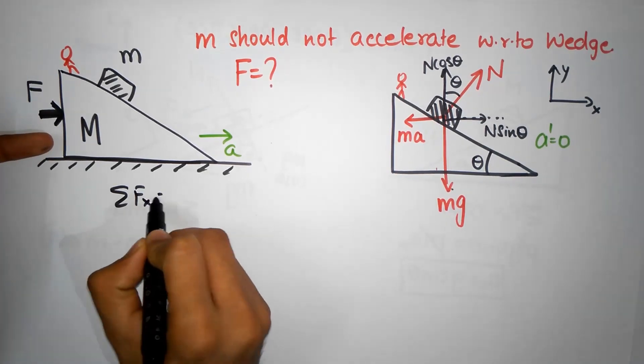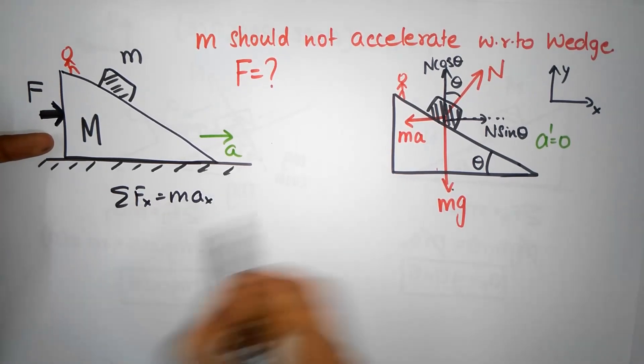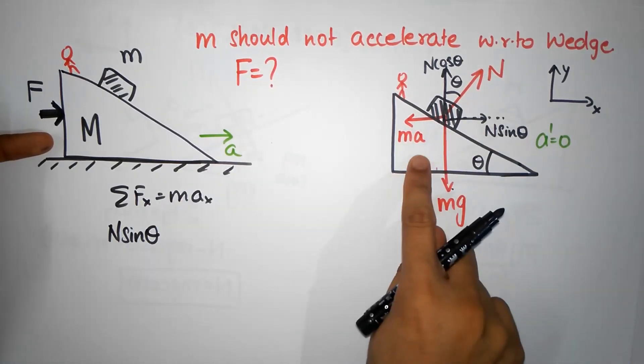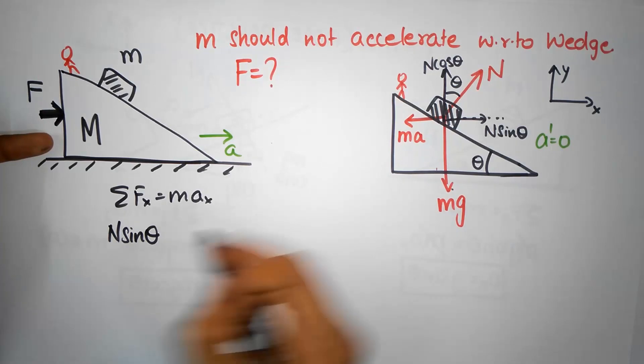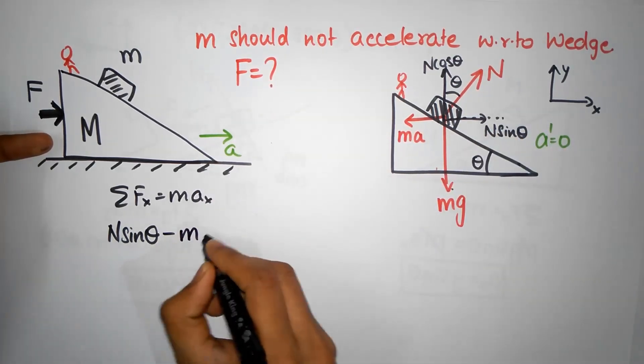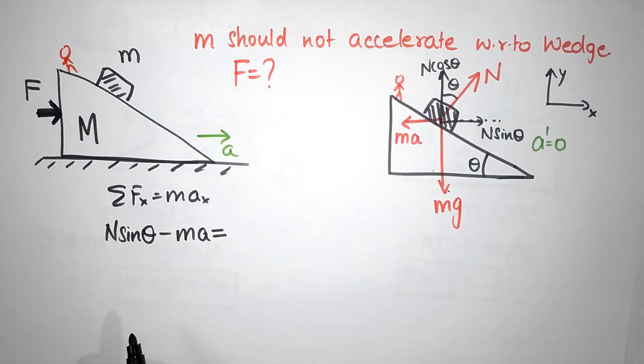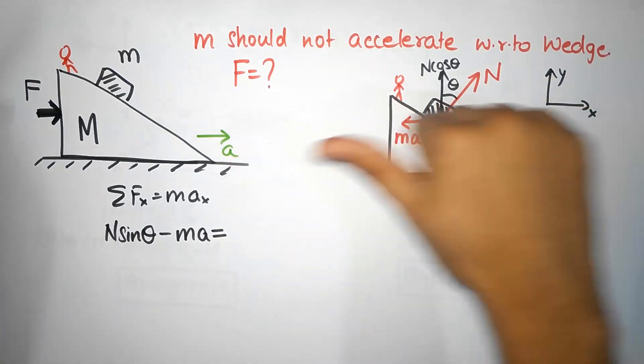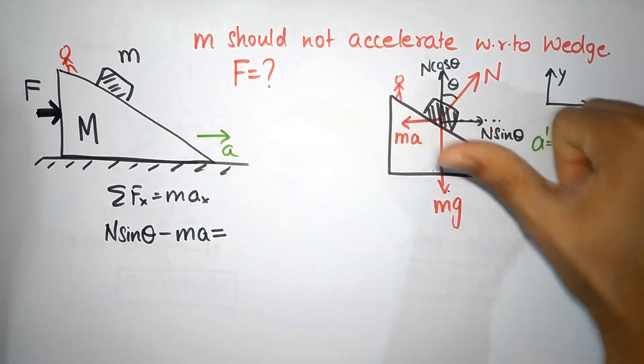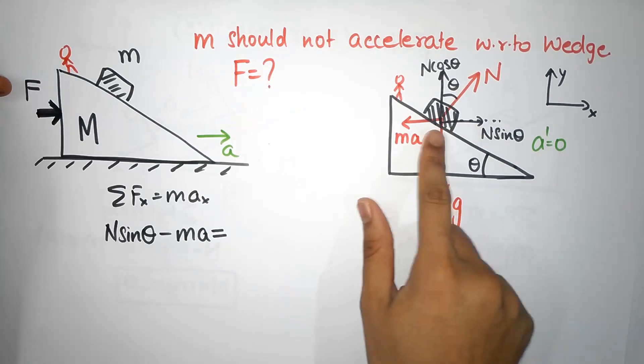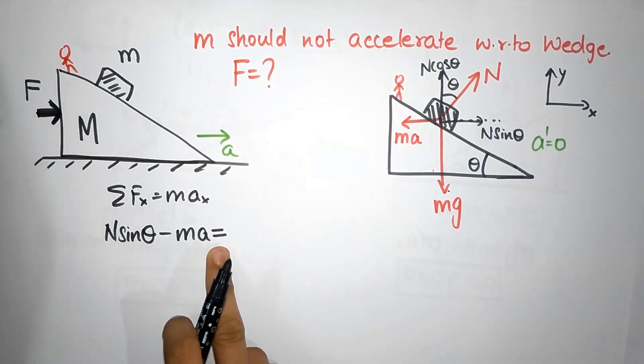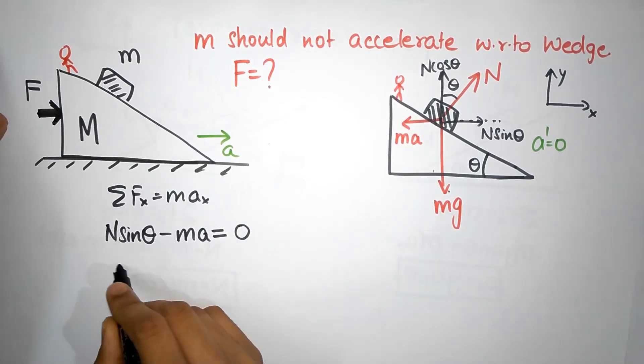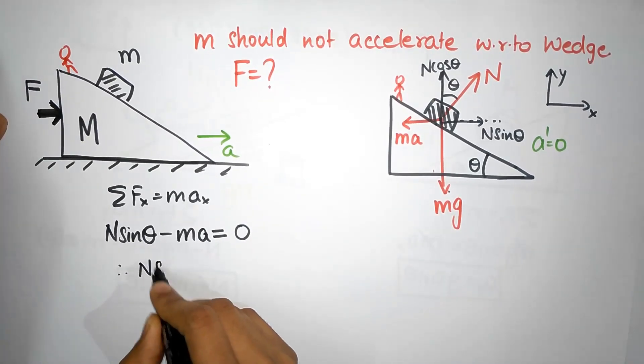Using Newton's second law, sigma Fx equals max. In the X direction you have N sin theta acting this way and ma acting opposite. N sin theta minus ma, these are the only two forces in the horizontal, must add up to mass times acceleration which is zero. Therefore N sin theta equals ma.